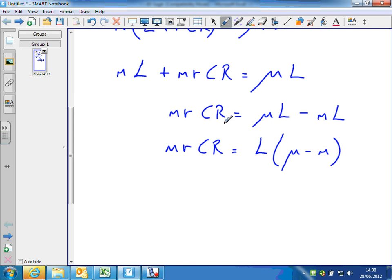So now I've factorised, I can divide both sides by mu minus m, so I get m r C R over mu minus m equals L.